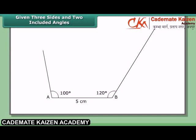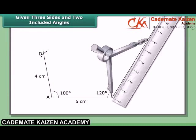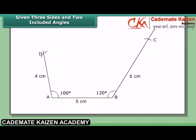3. Mark off distance AD = 4 cm and BC = 6 cm. 4. Join CD. Then ABCD is the required quadrilateral.